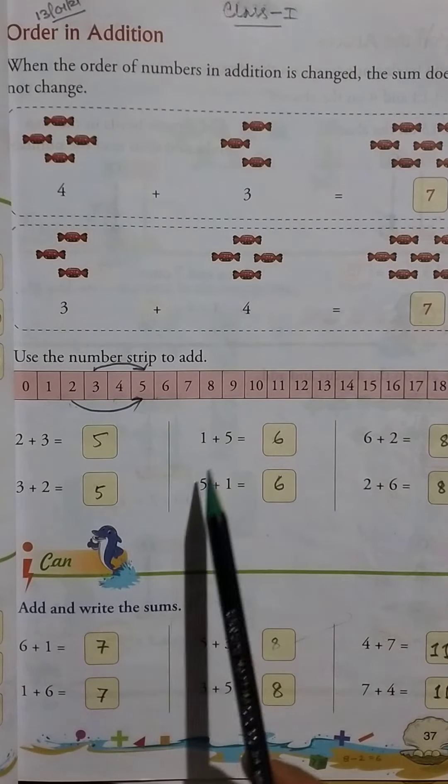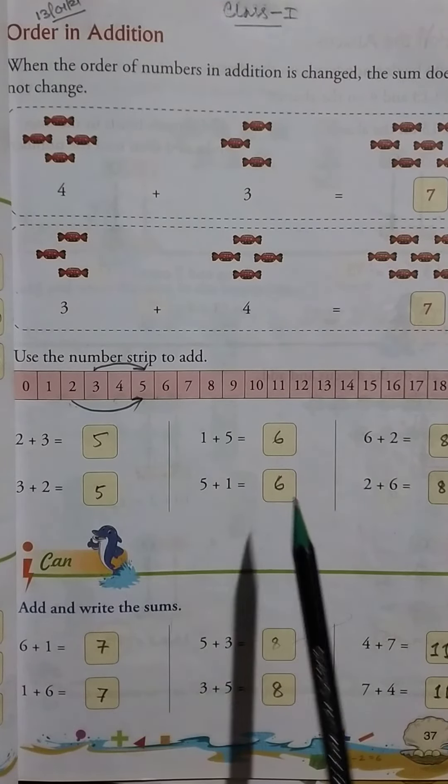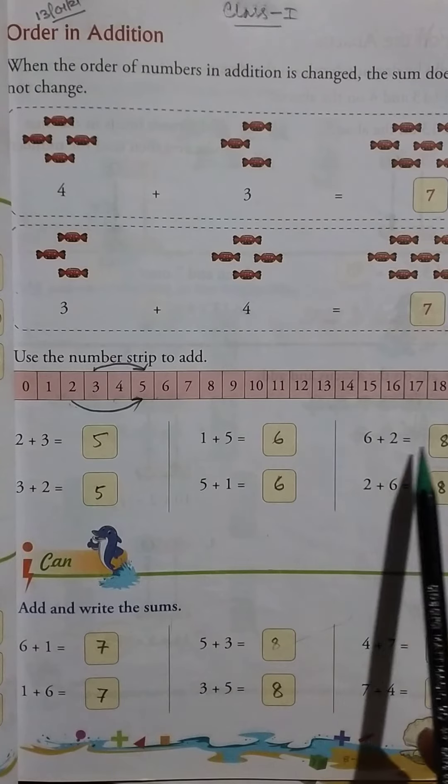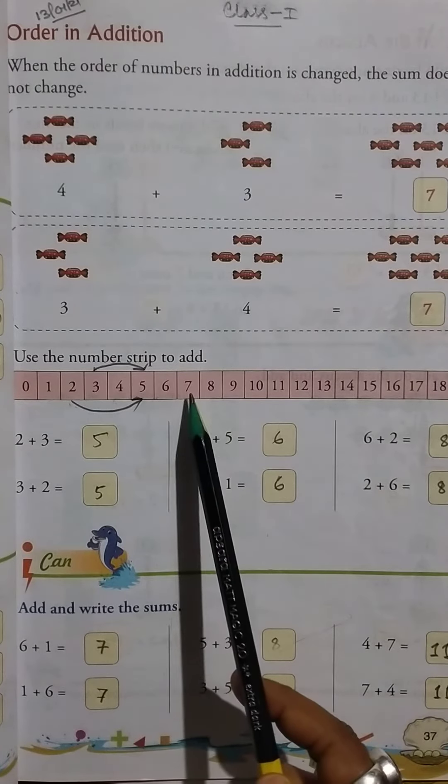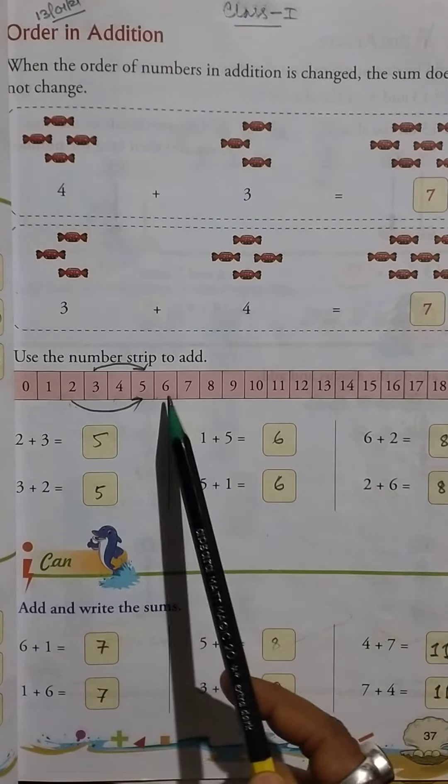Example: use the number strip to add. 2 plus 3 equals 5—one, two, three. So 2 plus 3 equals 5, then 3 plus 2 equals 5, same. Then 1...